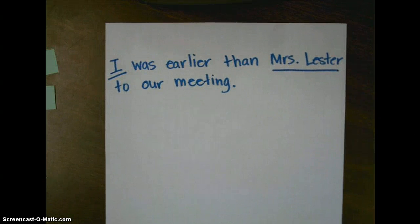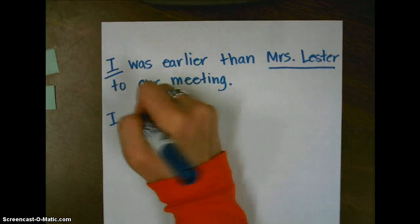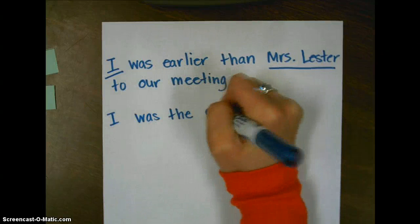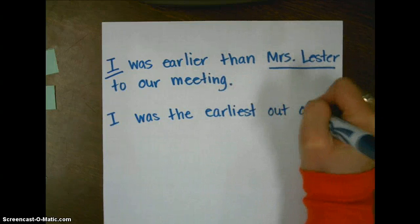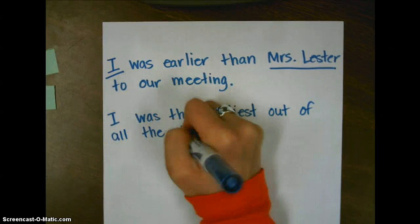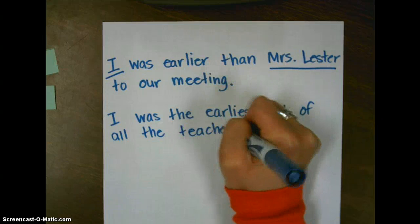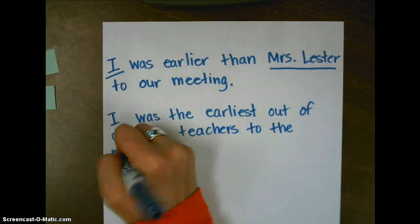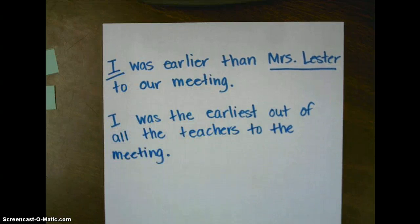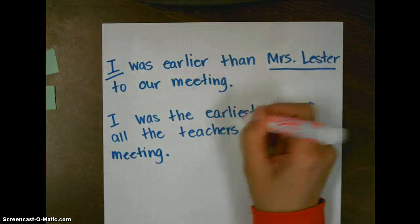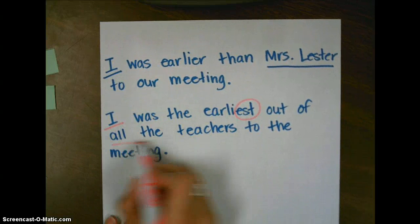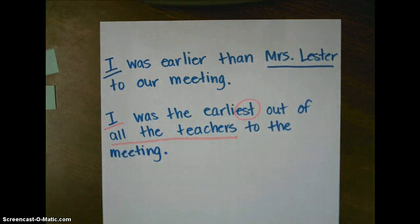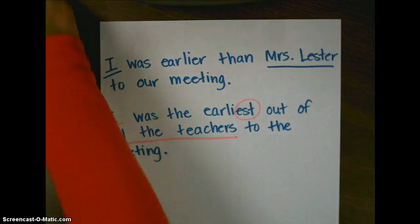Now, if I use the word earliest, I'm comparing three or more things. I was the earliest out of all the teachers to the meeting. So using the suffix est compares three or more things. Mrs. Lester, I am one. All the teachers are the rest. So again, the suffix er compares two things. The suffix est compares three or more things.